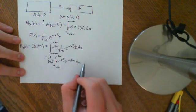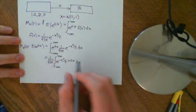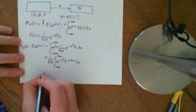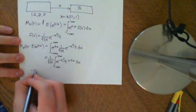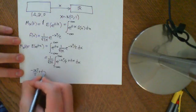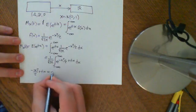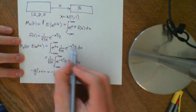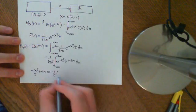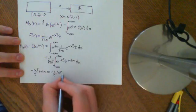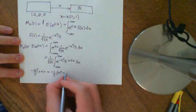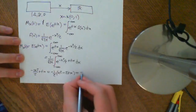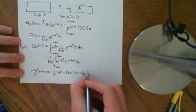We want just quadratic and constant terms in the exponent, and we can achieve this by completing the square. Looking at the polynomial negative x squared over 2 plus tx, we pull out the negative one-half, giving negative one-half times the quantity x squared minus 2tx. We keep the negative one-half out front because that structure resembles a normal distribution.